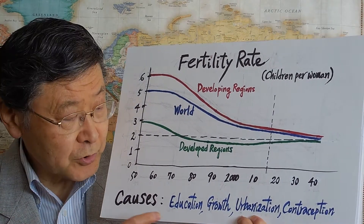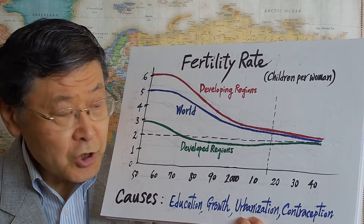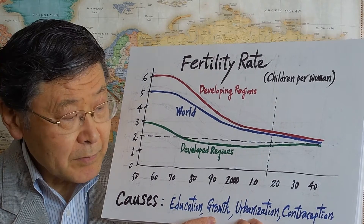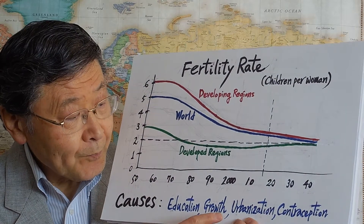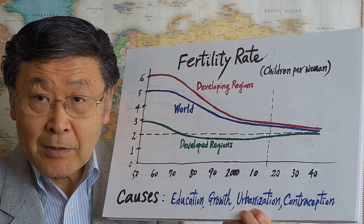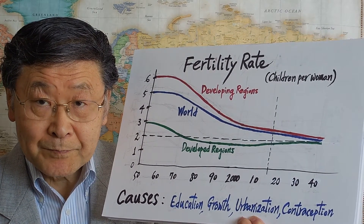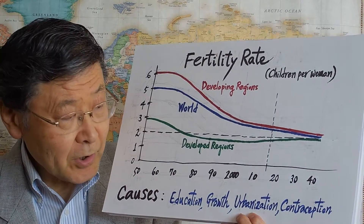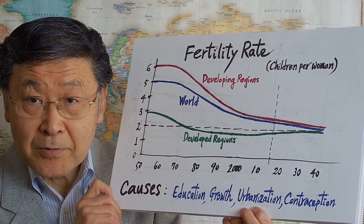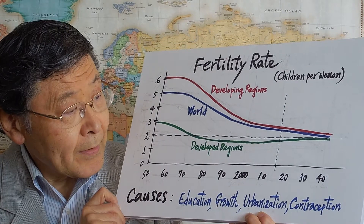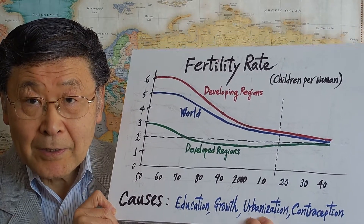Economic growth and better living conditions — increased per capita income — have led to fewer children, as we know. Urbanization is another factor: as people migrate from rural to urban areas, they tend to have fewer children than they did in rural areas. Contraception and other family planning methods are now widely available. All these factors have contributed to the global decline in the fertility rate.